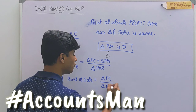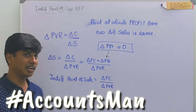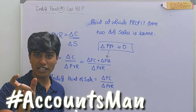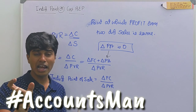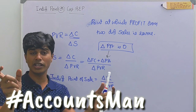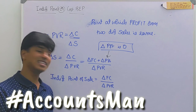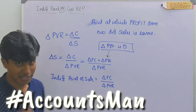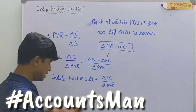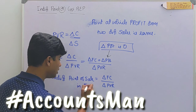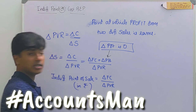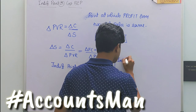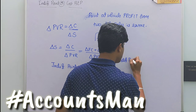So my indifference point of sale equals change in fixed cost divided by change in profit volume ratio. Change in fixed cost refers to the fixed cost of the first sales variant minus the fixed cost of the second sales variant. Change in PVR is similarly the difference between the PVR of the first and second sales variants. This gives the indifference point of sale in rupees.